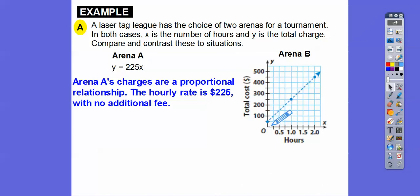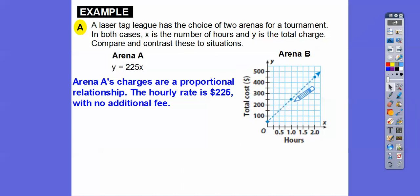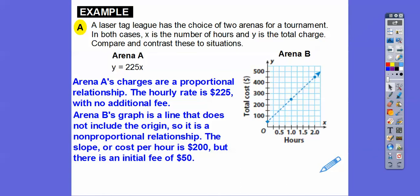For the hourly rate of Arena B, the slope starts at 50 and goes up to 250, so it rose 200 and ran 1 — rise over run is 200 over 1. The hourly rate is $200 per hour, but it doesn't go through 0,0. It has an initial starting fee of $50. Arena B's graph is a line that does not include the origin, so it's non-proportional, with a cost of $200 per hour but an initial fee of $50. If you went for one hour, Arena B would be more expensive, but after more than that, Arena A would be more expensive.